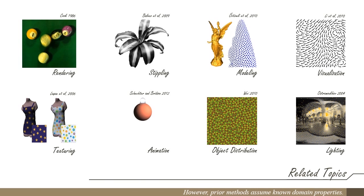However, prior methods assume known domain properties. Thus, they cannot handle situations involving unknown domains or domain-independent properties that could otherwise benefit from blue noise.